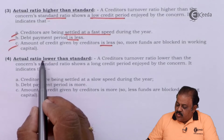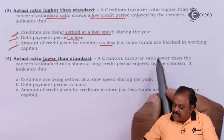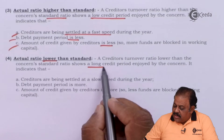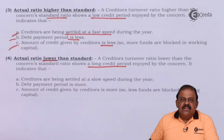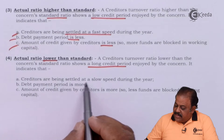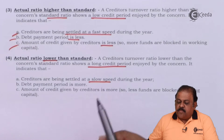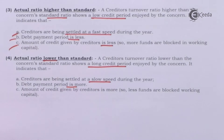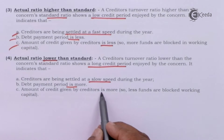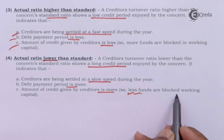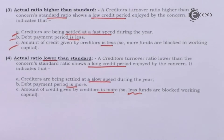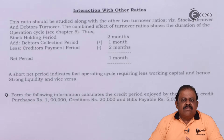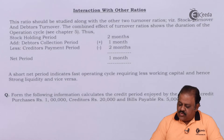If the actual ratio is lower than the standard, it indicates that creditors are being settled at a slow speed during the year. The debt payment period is more, and the amount of credit given by creditors is more, so lesser funds are blocked in working capital.